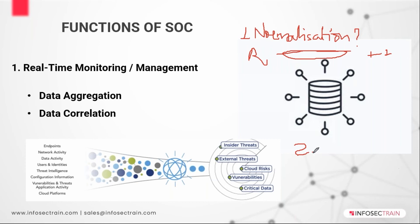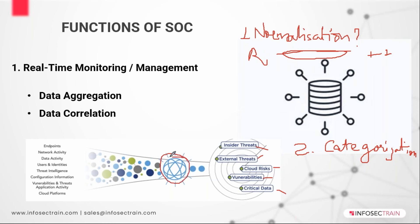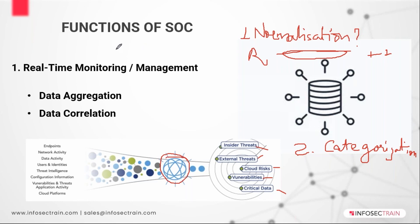Right after normalization, we have categorization. As the name suggests, you will be classifying logs — internal threat, cloud threat, criticality, and so on. Categorization classifies event logs systematically to make it easier to understand the correlation — for example, telling us that the website was being compromised. Grouping and classifying event logs into specific categories between two or more event logs is the part of categorization.